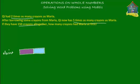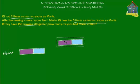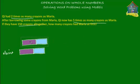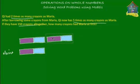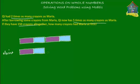So if Maria had these many crayons, then Chi would obviously have twice of this. So Chi would have this plus this, at first. Chi had two times as many crayons as Maria — that means she had two times the purple and blue blocks.